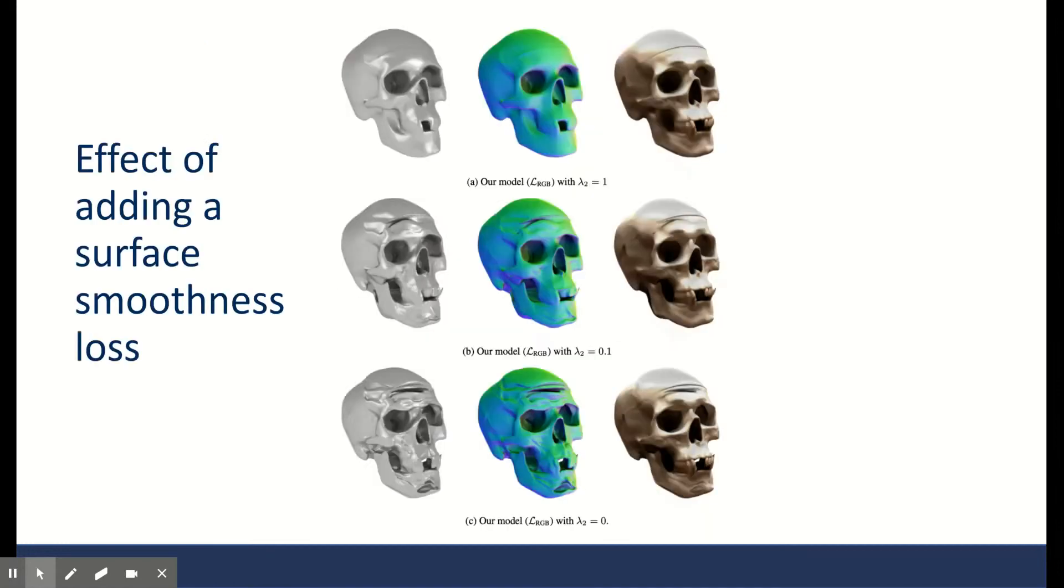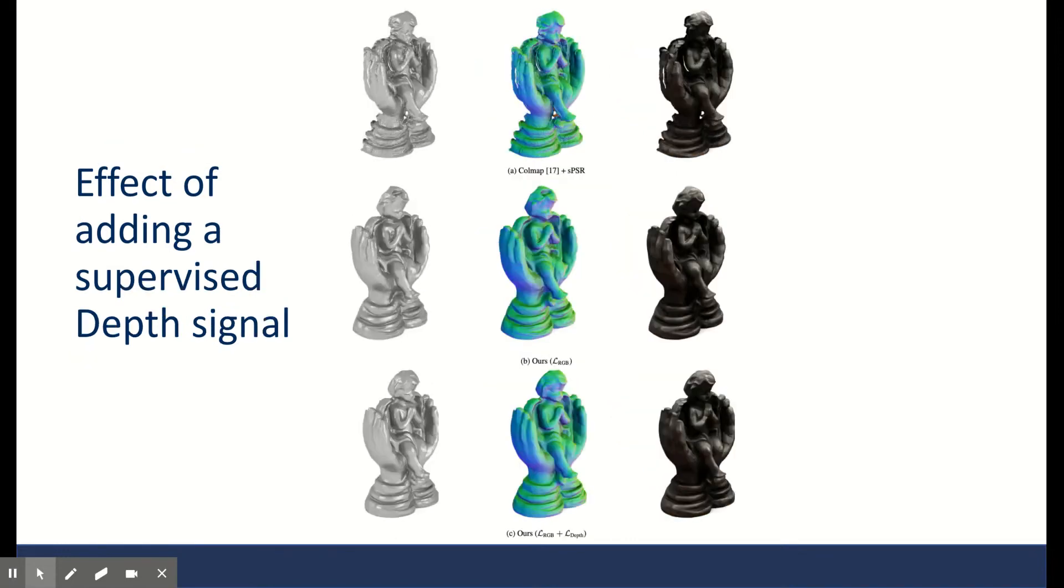In terms of ablation, they study the effect of their surface normalization. In practice, they use a surface normalization of 0.1, but as you can see, their results are decent even without surface normalization. They also ablation how much they would benefit if they get a supervised depth signal and added loss on the depth estimation as well. The bottom two rows are with only RGB loss or with both RGB and depth loss. Personally, they both, B and C, look the same to me. So I would say they have successfully handled the depth estimation.